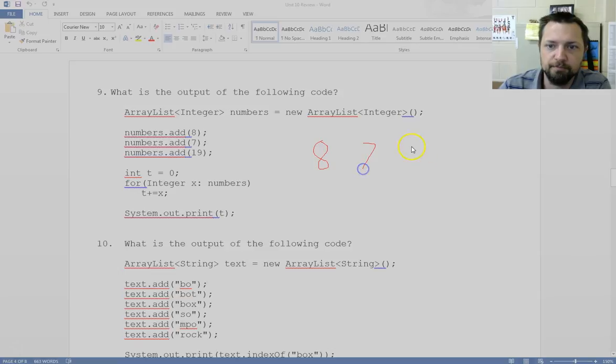What is the output of the following code? 8, 7, 19. We're doing a for each loop. A for each loop will access every item. It will store an integer x. Then we take the 8, we add it to t. T is now an 8. Then we go to the next item, 7. We add that to t. Now we're at 15. X goes to the next item, 19. 19 plus 15 is 34. T is now 34, and then we print 34.